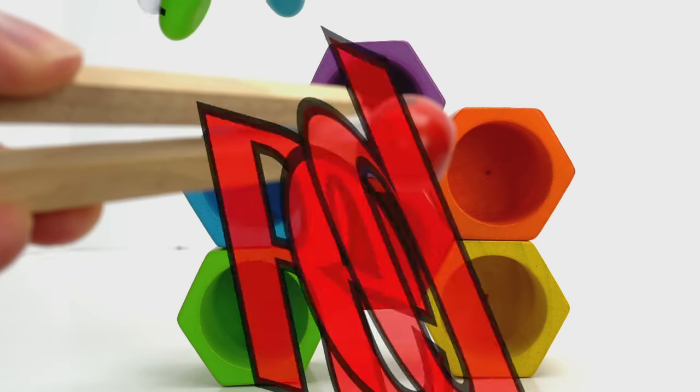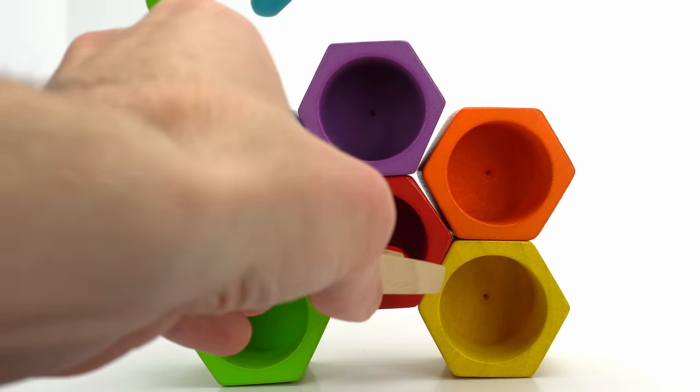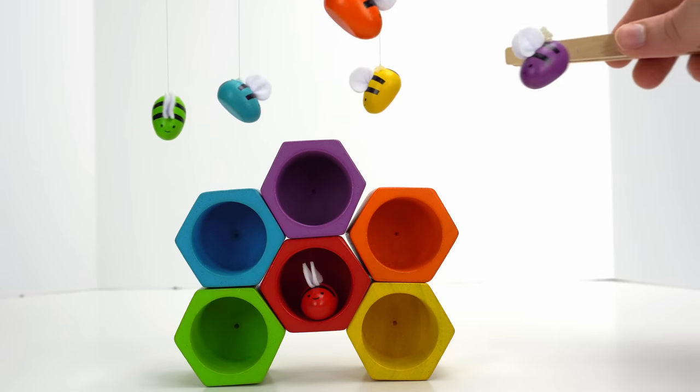Look, it's a red bee. Where should we put it? How about here in the middle with the red hexagon? Here we go, yellow bee.